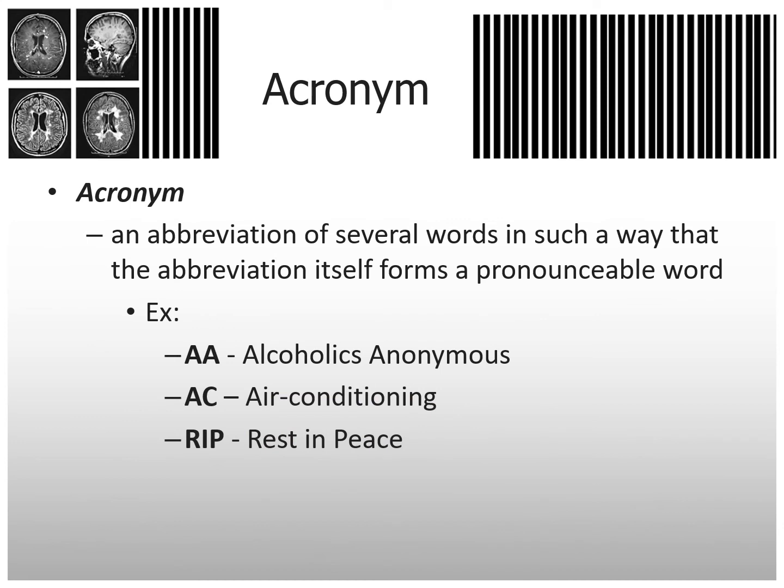An acronym is an abbreviation of several words such that the abbreviation itself forms a pronounceable word. A lot of people don't realize some words out there are actually acronyms. For example, AA is Alcoholics Anonymous, AC is Air Conditioning, RIP is Rest in Peace. With texting prevalent the last couple of decades, there are many more. Even RADAR is actually an acronym — each letter stands for something.